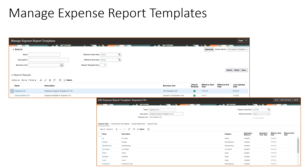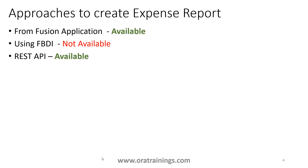When you want to create an expense report, you need to understand which particular expense type to consider and whether that expense report is available for the Business Unit you want to work with. On a high level, if you want to check whether a template is available for the BU, navigate to the task 'Manage Expense Report Templates.' If it's not available, create it. If it is available, validate the expense template name, which BU it belongs to, and what expense types it supports.